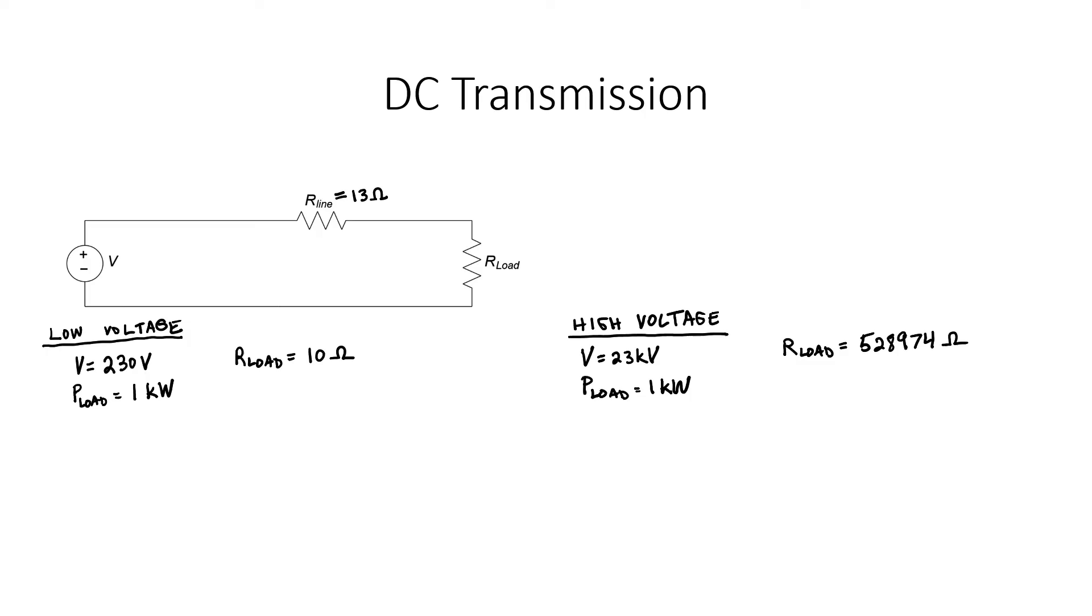Let's first verify that the power in these two cases is indeed the same. We can first calculate the current. In the low voltage case, the current is 10 amperes. In the high voltage case, the current is only 43.48 milliamps. It's rather easy to verify that the load power, 1 kilowatt, is equal to I squared times the load resistance in both of these cases.